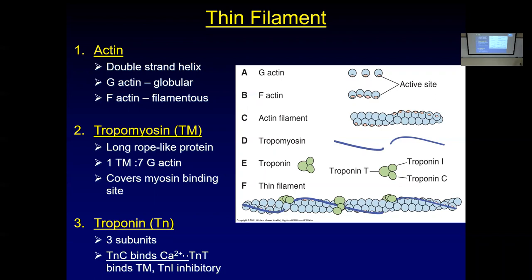Myosin really wants to grab onto actin and hold on all the time — it's like the significant other that always wants to hold hands. Tropomyosin says no, stay away. Troponin exists at regular intervals and is anchored onto the tropomyosin. At certain times, troponin changes its conformational shape — it bends or moves, pulling the tropomyosin out of the way to let the binding site be exposed, so myosin can come over and bind.